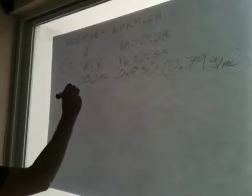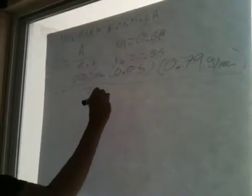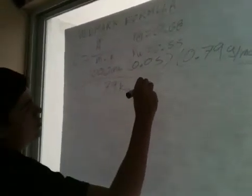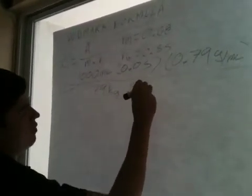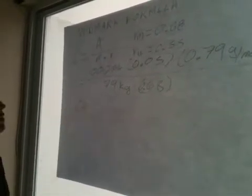And divide this by, for example, my mass, which is 79 kilograms, multiplied by the gender constant 0.68 for men. And you have that my concentration